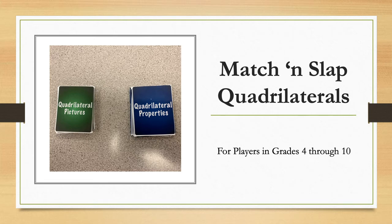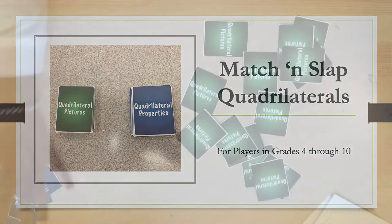In the game Match and Slap Quadrilaterals, players try to be the first person to slap a quadrilateral property card that matches a quadrilateral picture card. The first player with the most matches when the picture card pile is empty wins the game.